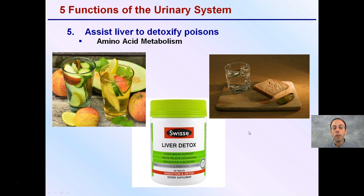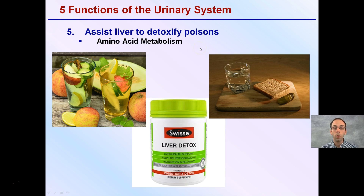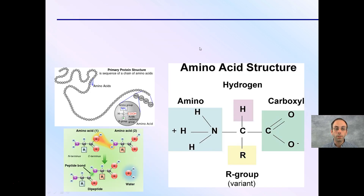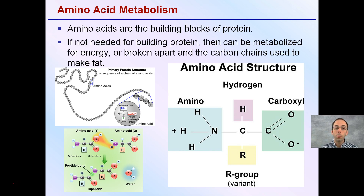Lastly, the urinary system assists the liver to detoxify poisons, particularly through amino acid metabolism. While people talk about liver detox diets, it's really the urinary system on a continual basis doing this work. Amino acids are the building blocks of proteins; when not needed, they can be metabolized for energy or broken apart. Within amino acids, we have the variant R group, carboxyl group, hydrogen, and amino group. The nitrogen component can accumulate to toxic levels within the body.